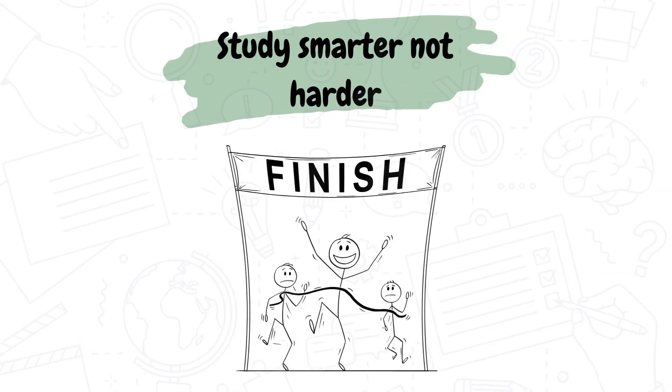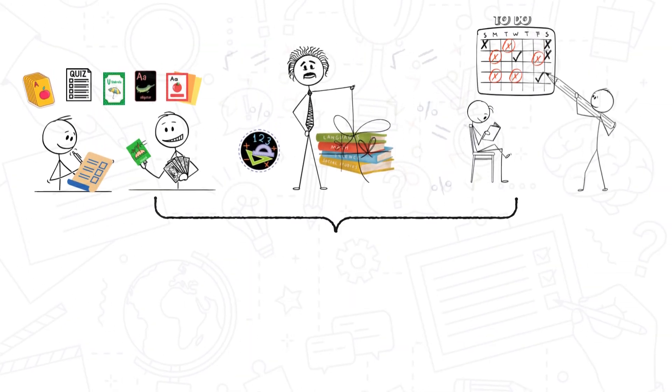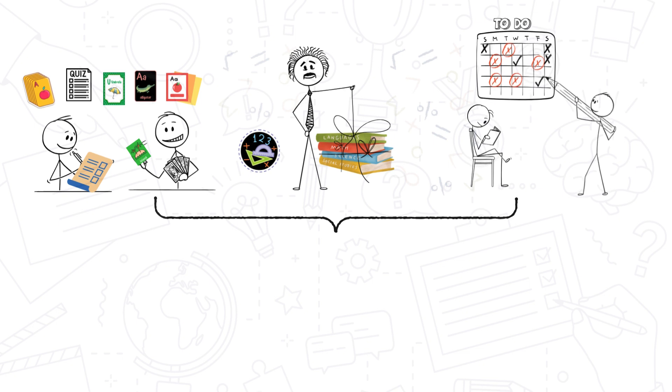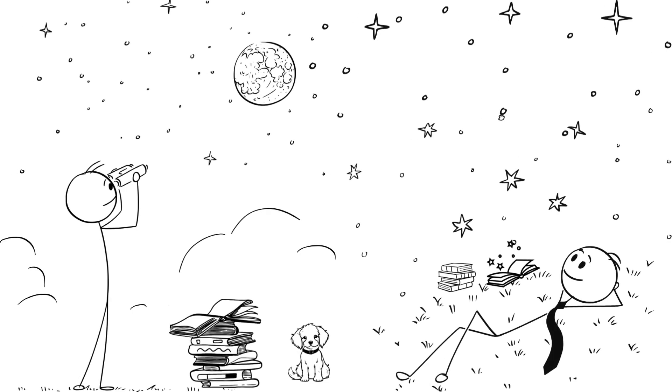Conclusion: study smarter, not harder. These three techniques - testing yourself, mixing subjects, and spacing your study sessions - work because they align with how your brain processes information. So, whether you're preparing for an exam or learning a new skill, study smarter, not harder.